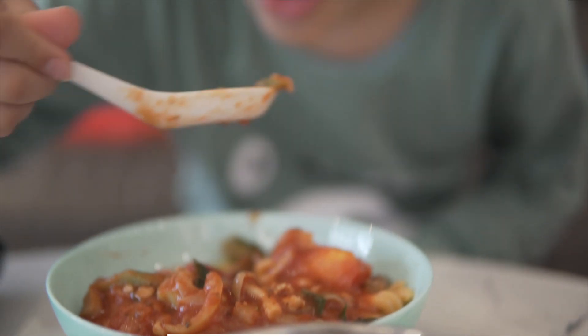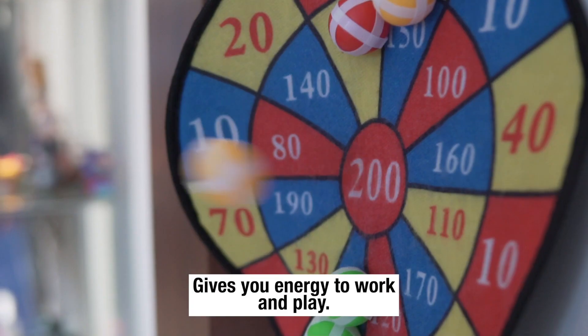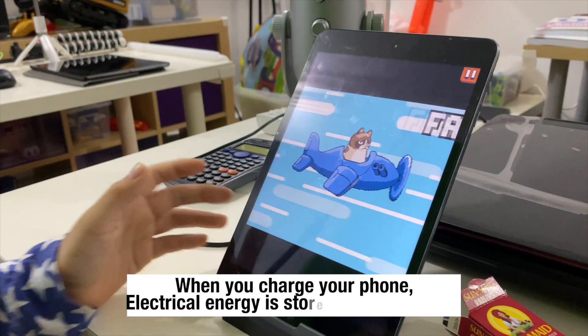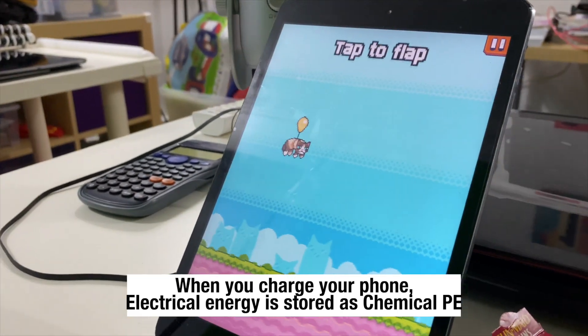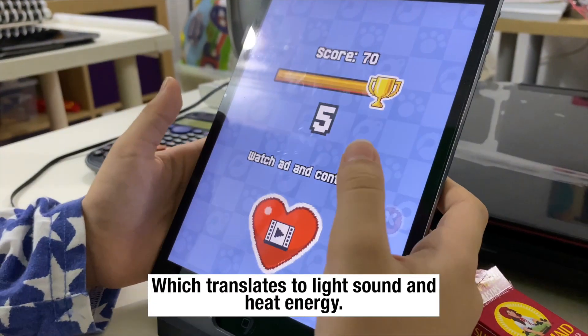When you eat, the body breaks down the food and gives you energy to work and play. When you charge your phone, electrical energy is stored as chemical potential energy, which translates to light, sound, and heat energy.